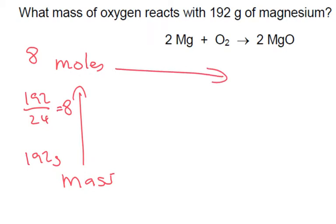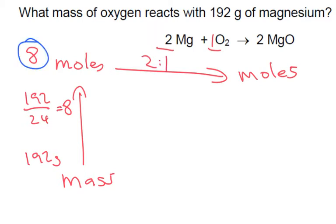Now we're going to look at how many moles of oxygen we have. Looking at the ratio, it's a 2 to 1 ratio. So we've got 8 moles on the left — therefore, if it's 2 to 1, we're going to have 4 moles on this side.